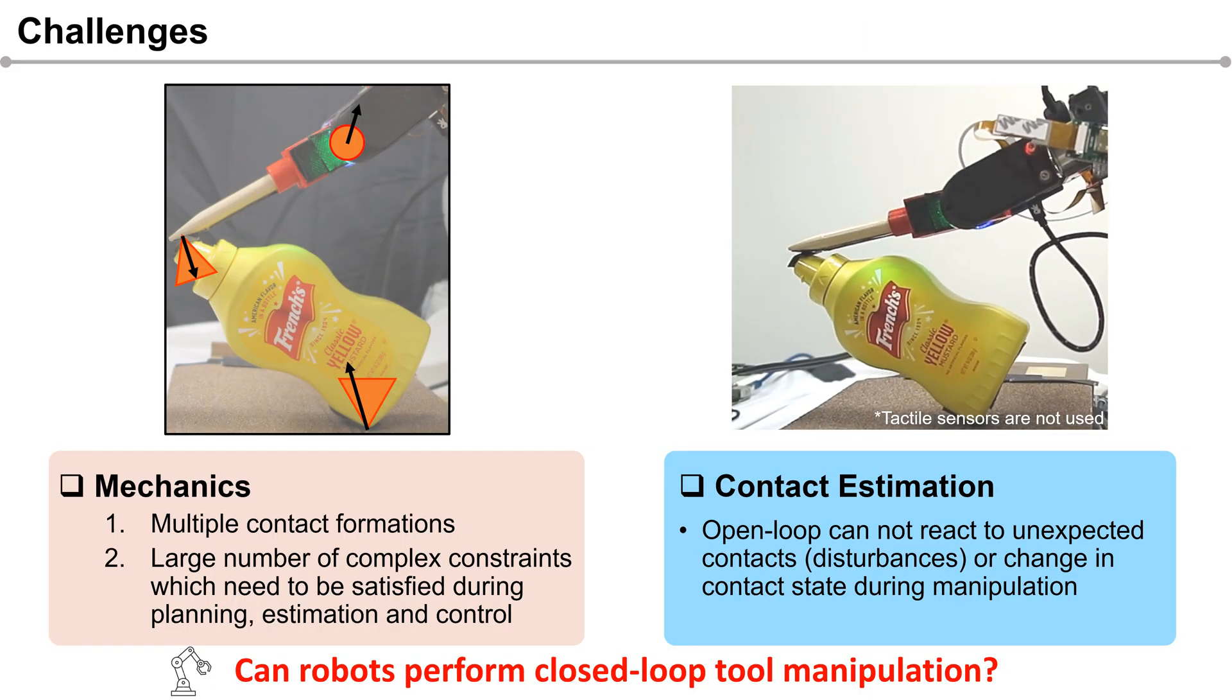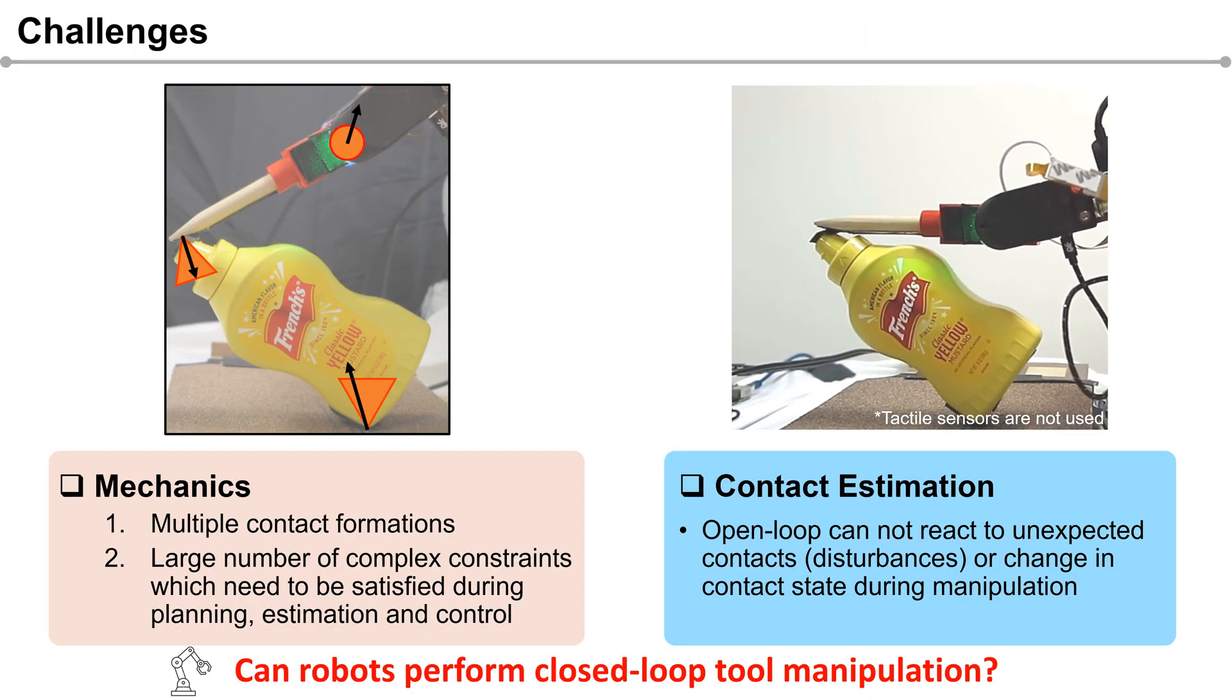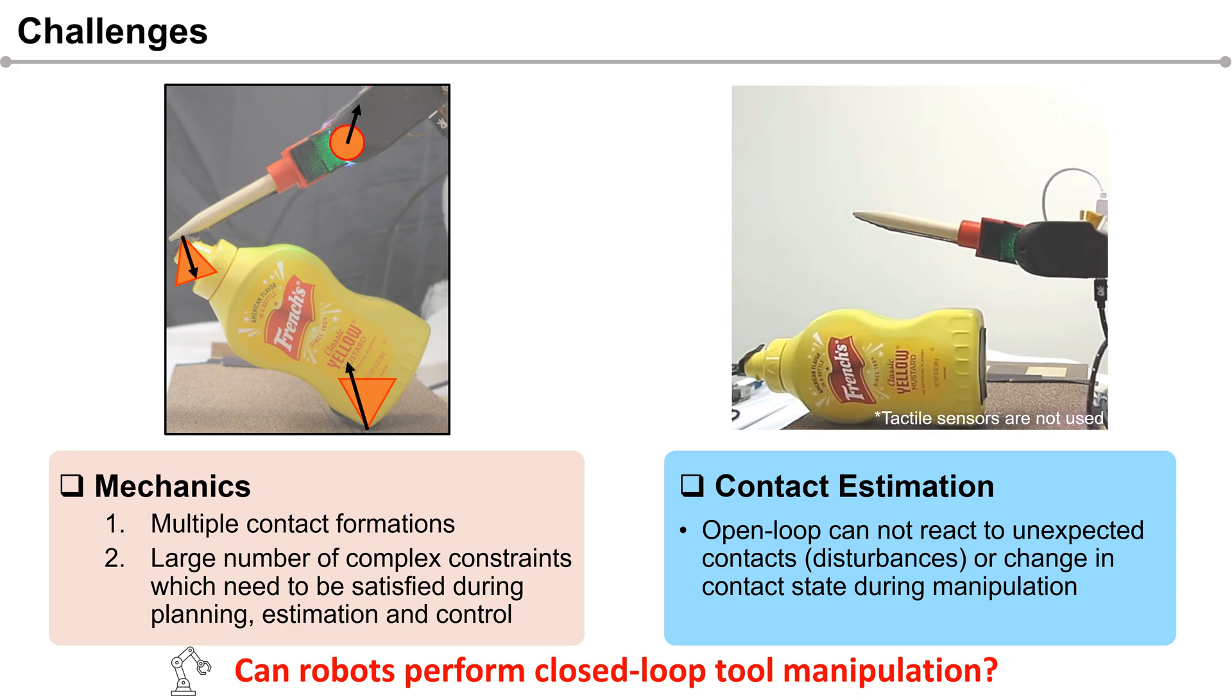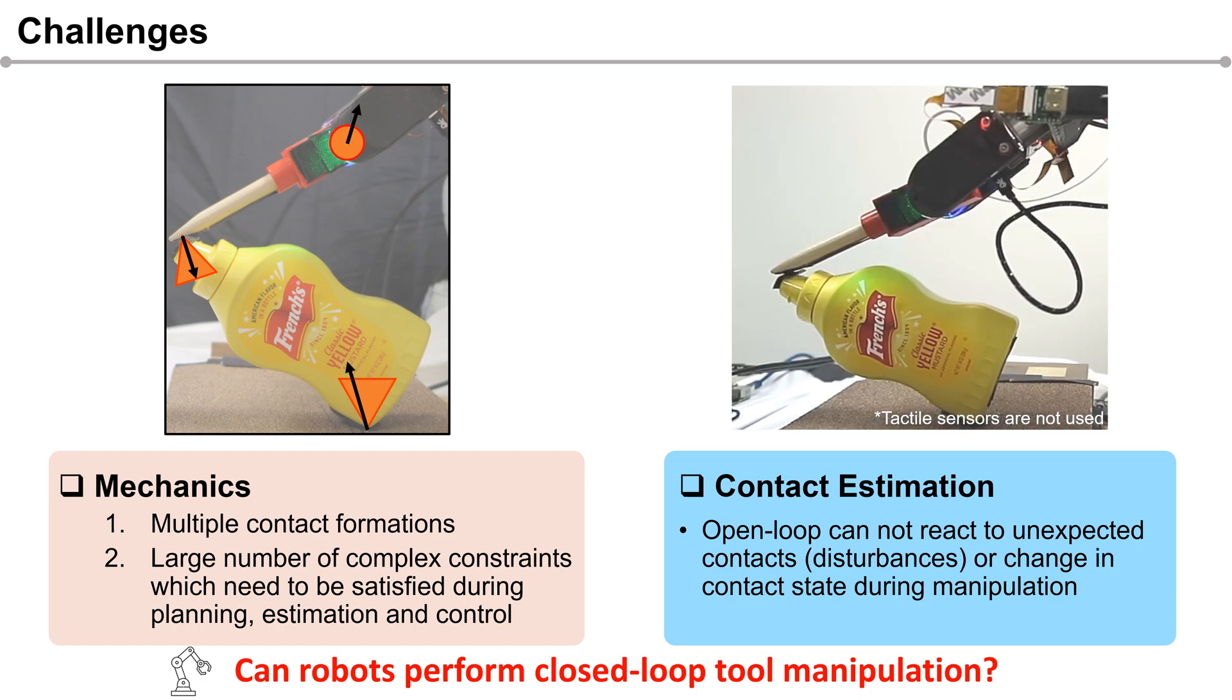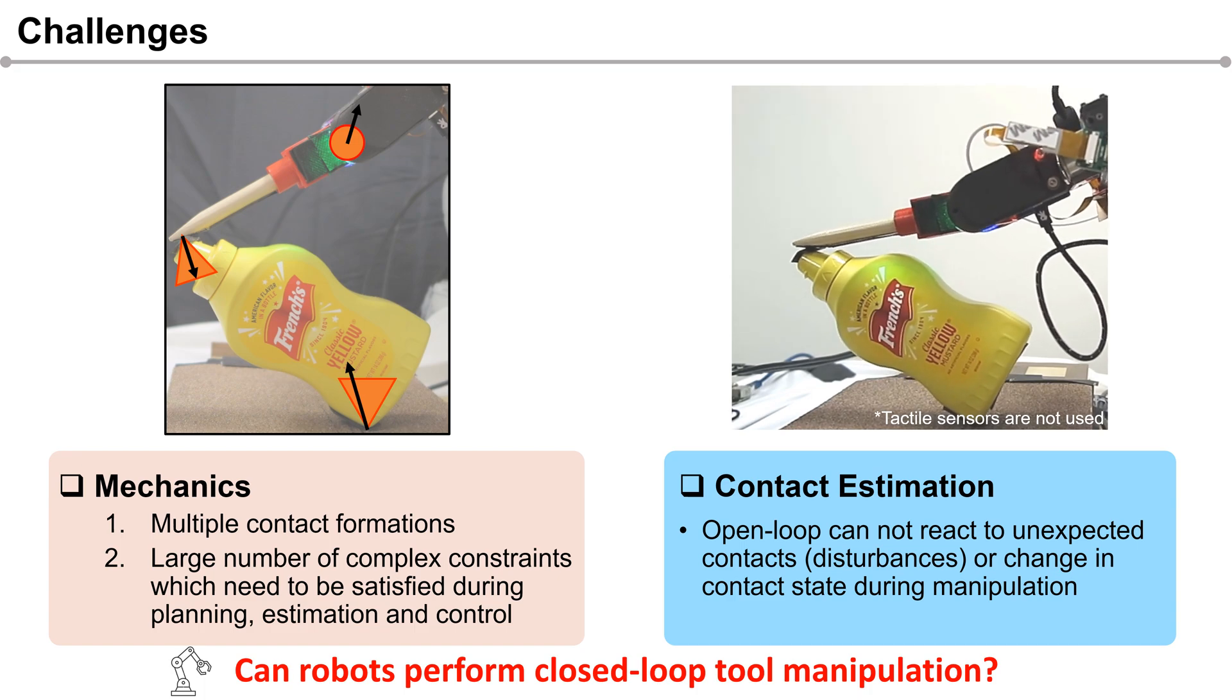Tool manipulation leads to multiple contact formations. As a result, the robot needs to satisfy these contact constraints during planning as well as estimation and control.